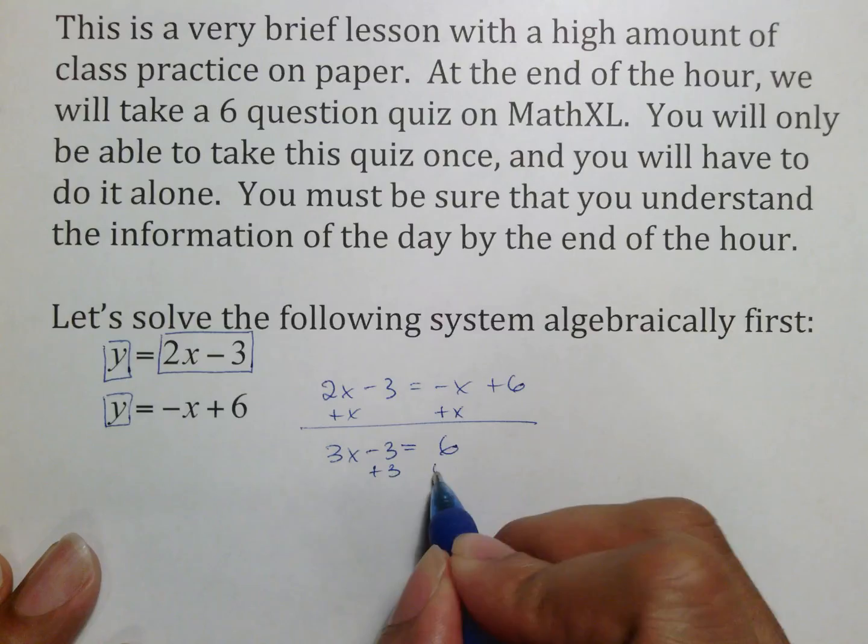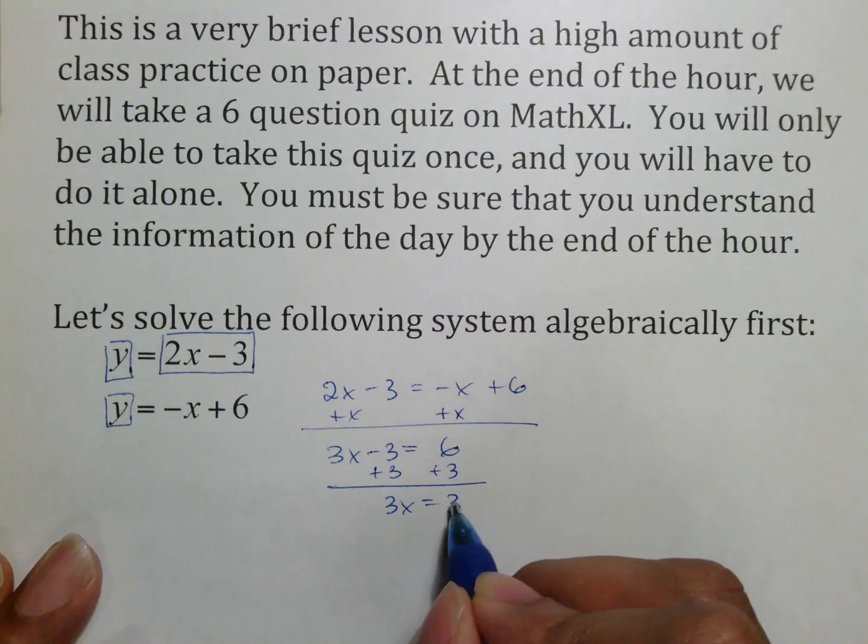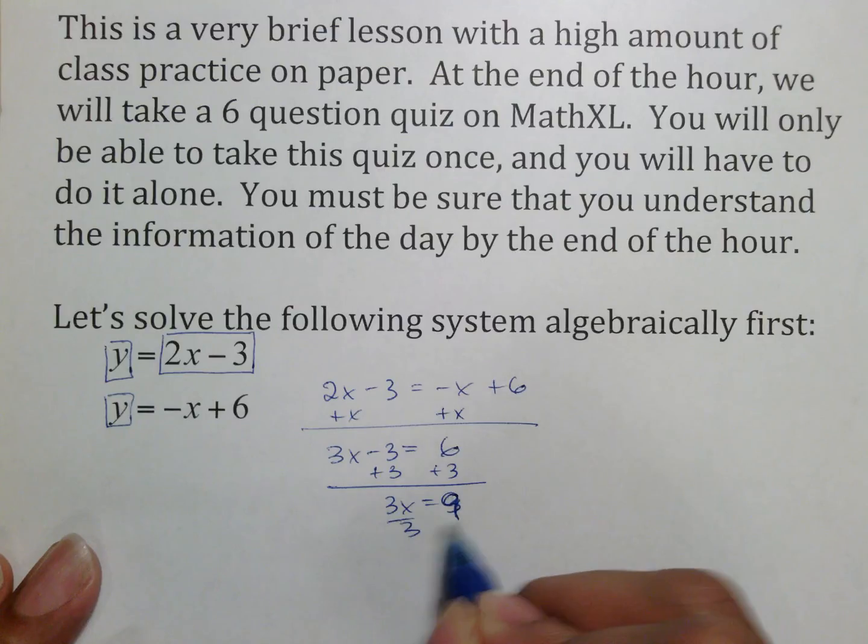From there, we solve as usual. Add 3 to both sides, getting 3x equals... I'm sorry, 9. And then dividing by 3, we end up with x is equal to 3.